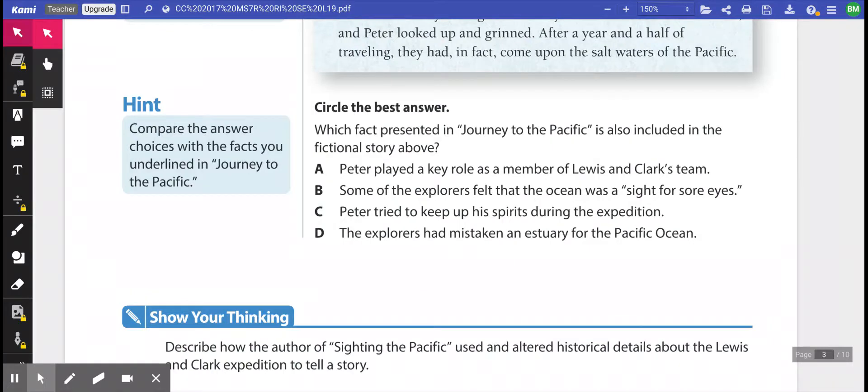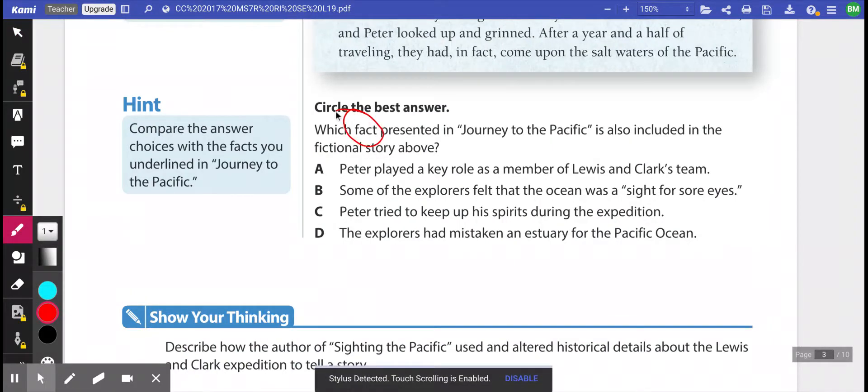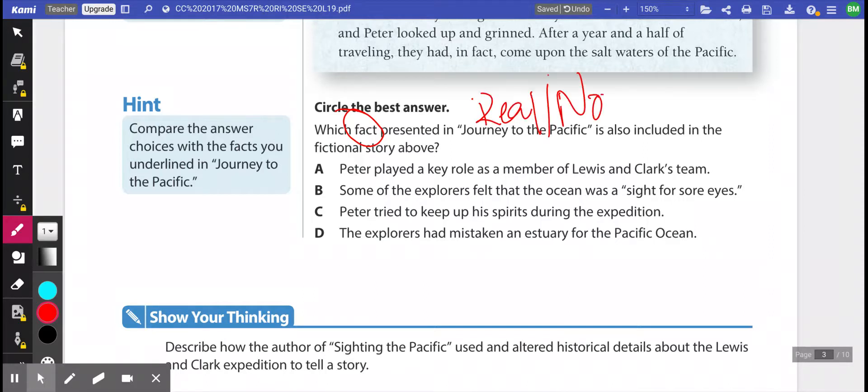And my question actually asks which facts, which fact presented in Journey to the Pacific, which is ours, is also included in the fictional story above. So it's asking me which fact in the real nonfiction story is presented in our actual fiction story. So think about what we put about our fiction story. Anything that had the elements of fiction, which is made up means that it's not factual.